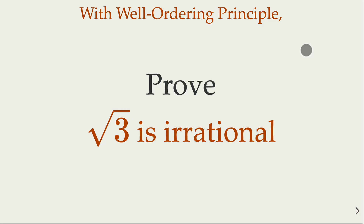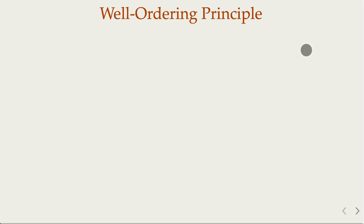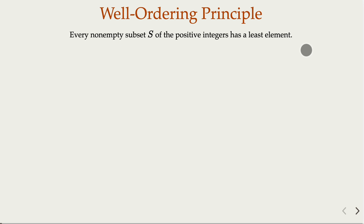Almost everyone knows how to prove that the square root of 2 or square root of 3 is irrational — that's proof by contradiction. But today, we're going to try to prove it using the well-ordering principle. Recall that the well-ordering principle states that any non-empty subset S of the positive integers has a least element. That is the foundation for the principle of mathematical induction.